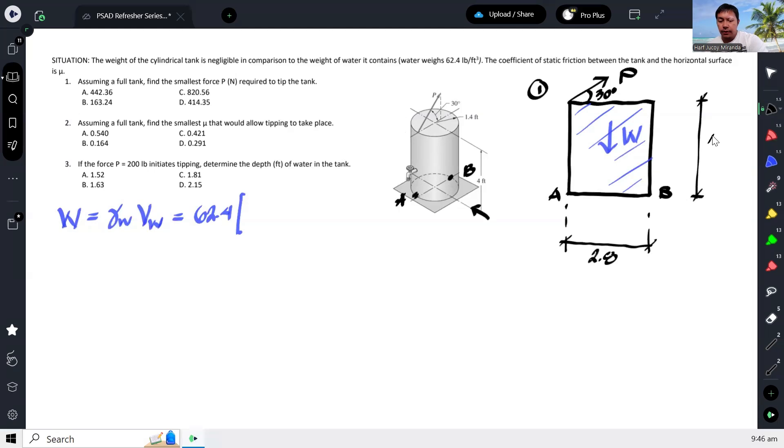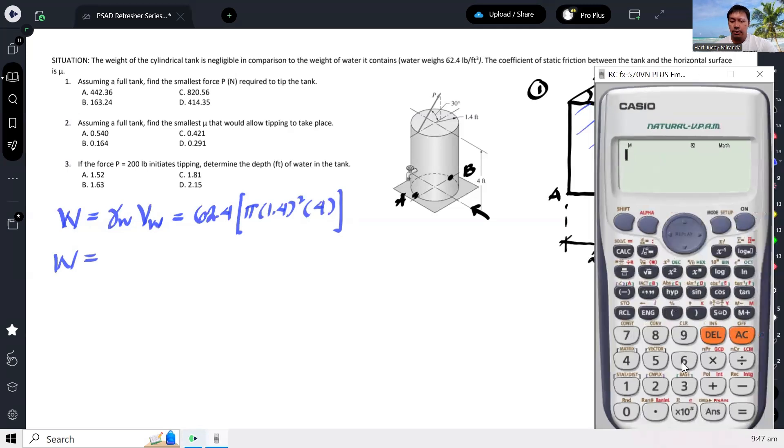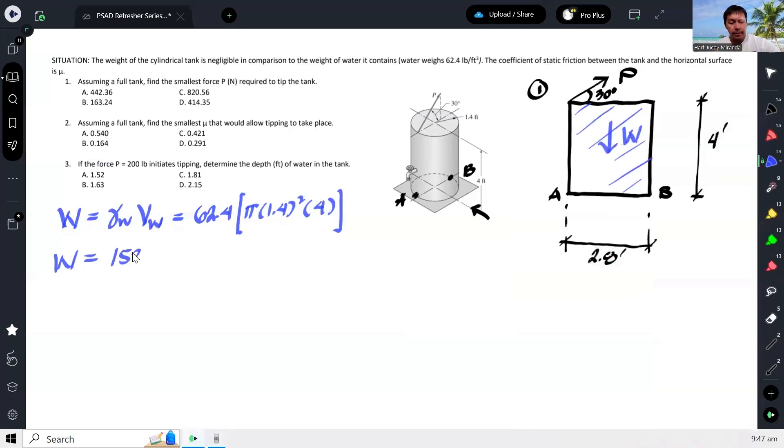And then we are also given the height. So both in feet, this is 4 feet. And so the volume of a cylinder is π times radius squared times the height. So that would be π times 1.4 squared times 4. So the weight of the water can be calculated directly. So that is 62.4 times π times 1.4 squared times 4, so that gives us 1536.917.